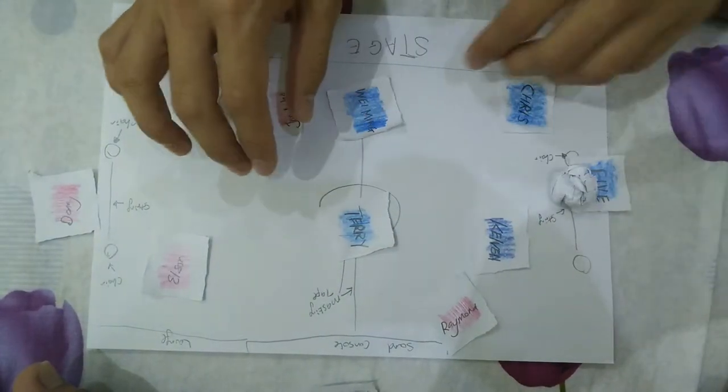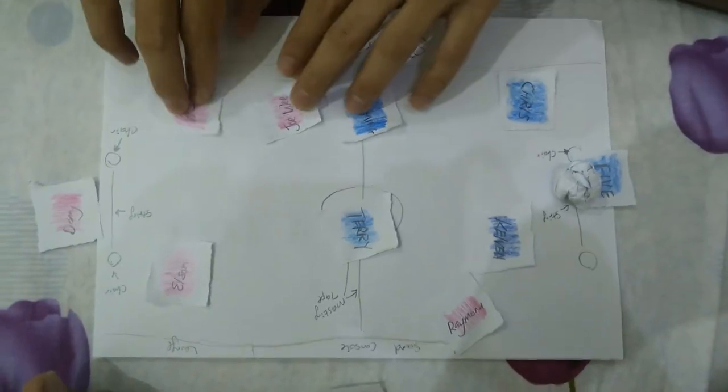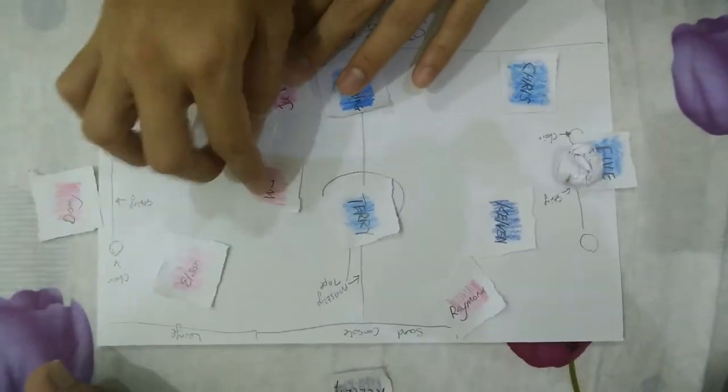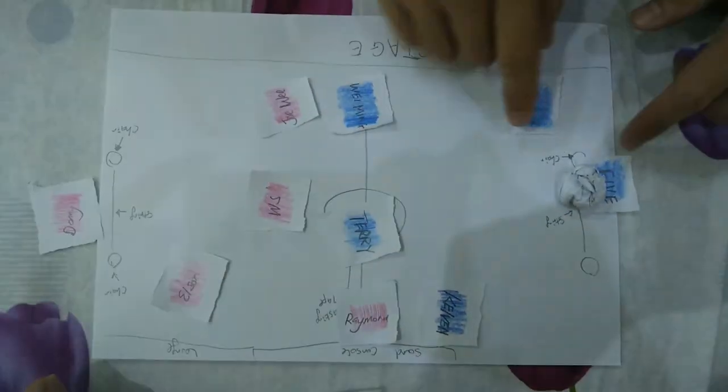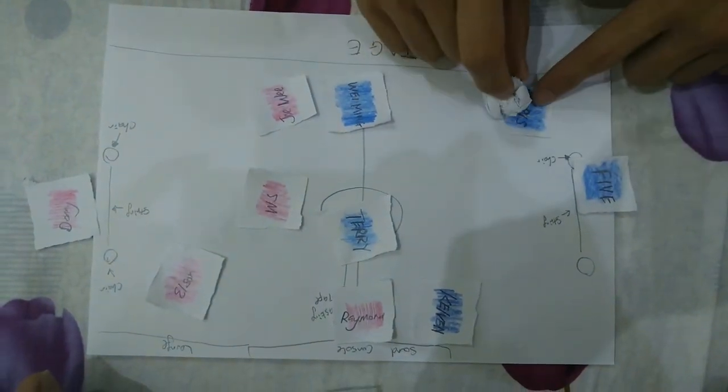Afai will hold that ball. Okay, so when Afai holds the ball, Wei Xiang will be here blocking Terry. So when Afai holds the ball, Kelvin and Raymond will run up here and then he will pass the ball to Chris first.